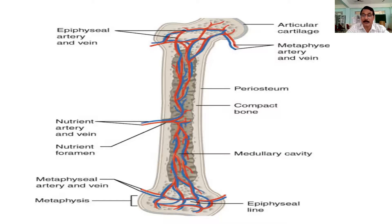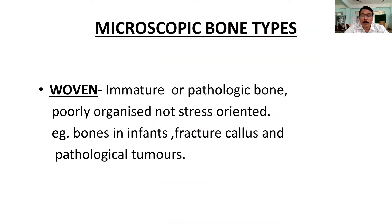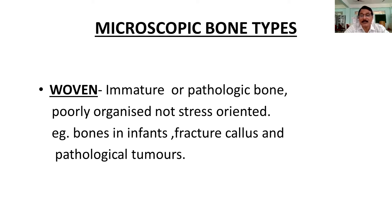What are the microscopic bone types? There is woven bone — woven means it is not stratified, not smooth, and not organized. Immature and pathological bones are poorly organized and not stress-oriented. In normal long bone, condensation of bone follows the line of stress — where there is more stress, more compression of bone takes place, according to Wolff's law. But in woven bone, this orientation is reduced; the tissue cells are there but they are not organized properly in a systematic fashion, so it is called woven bone.